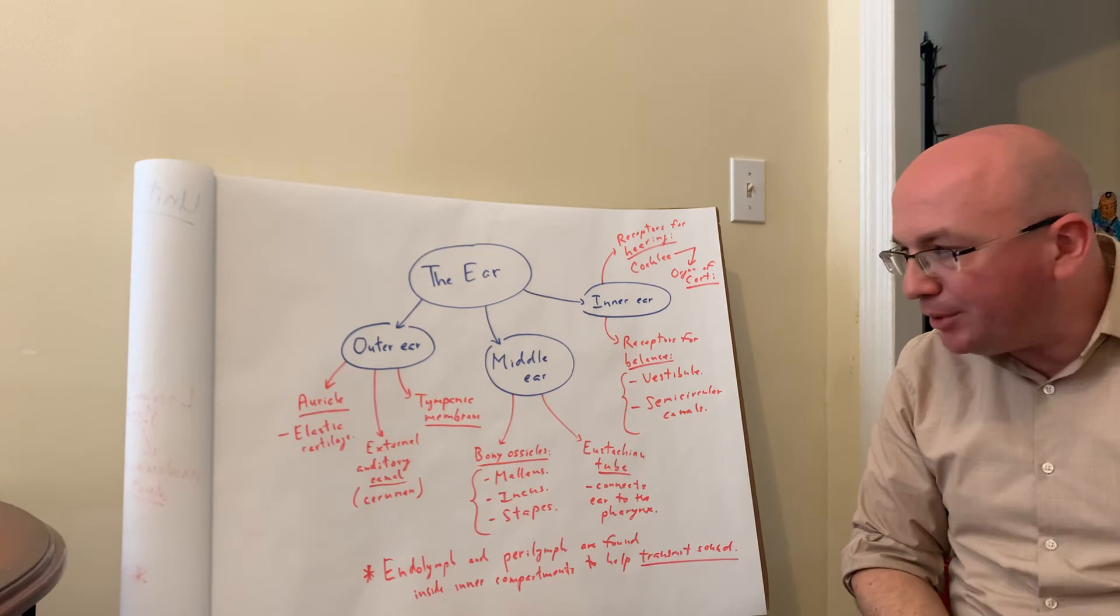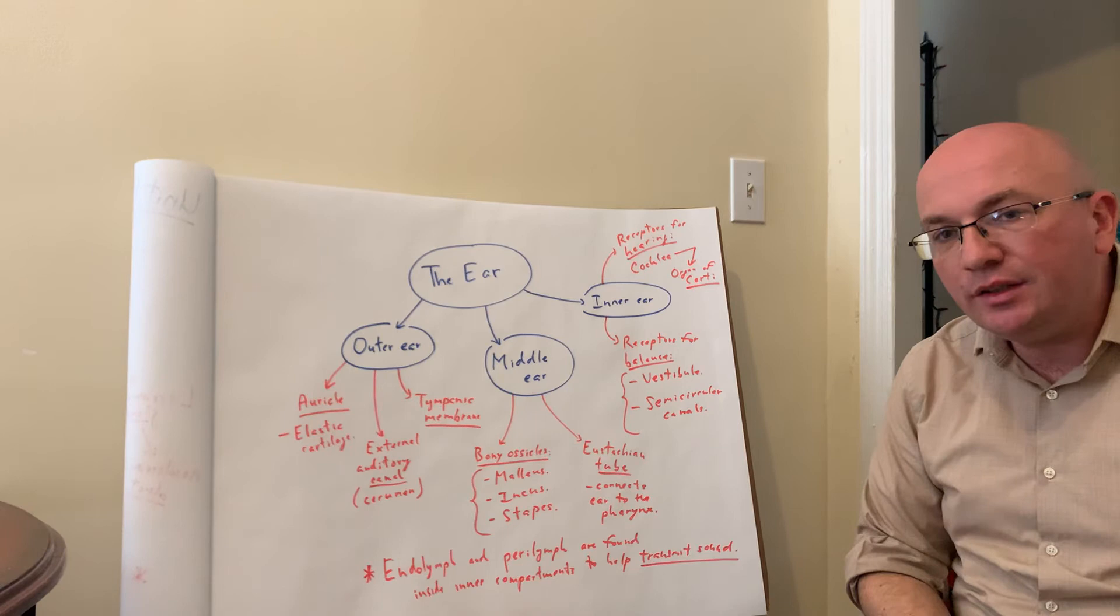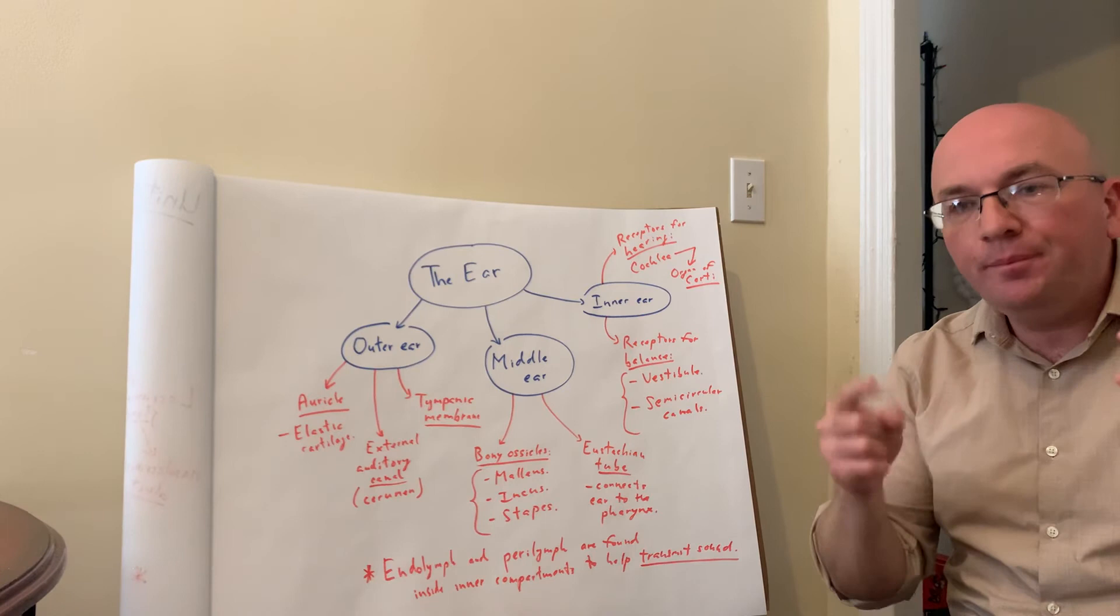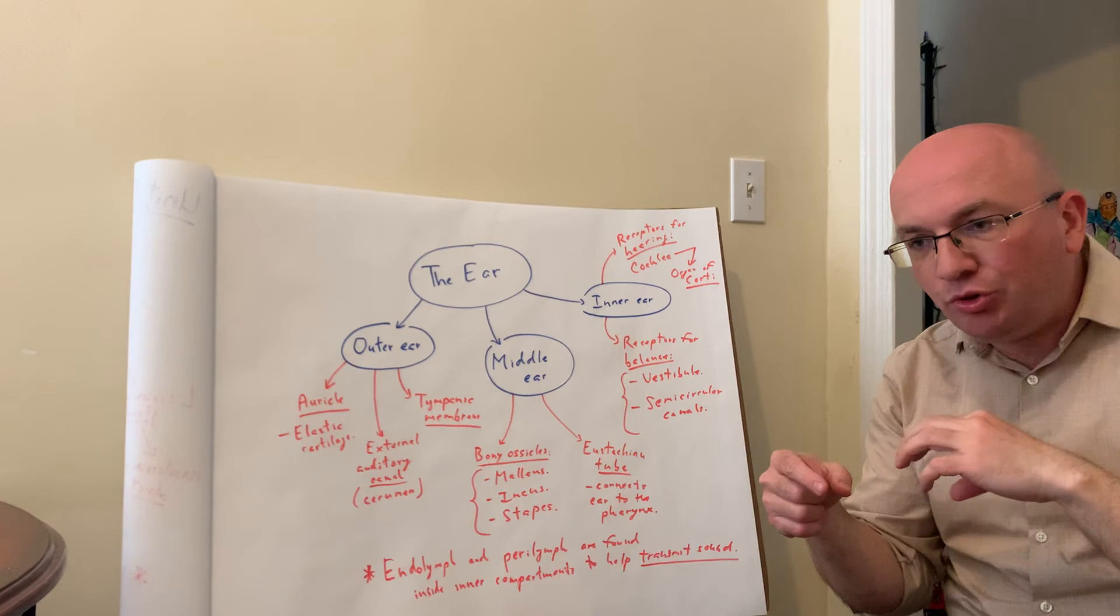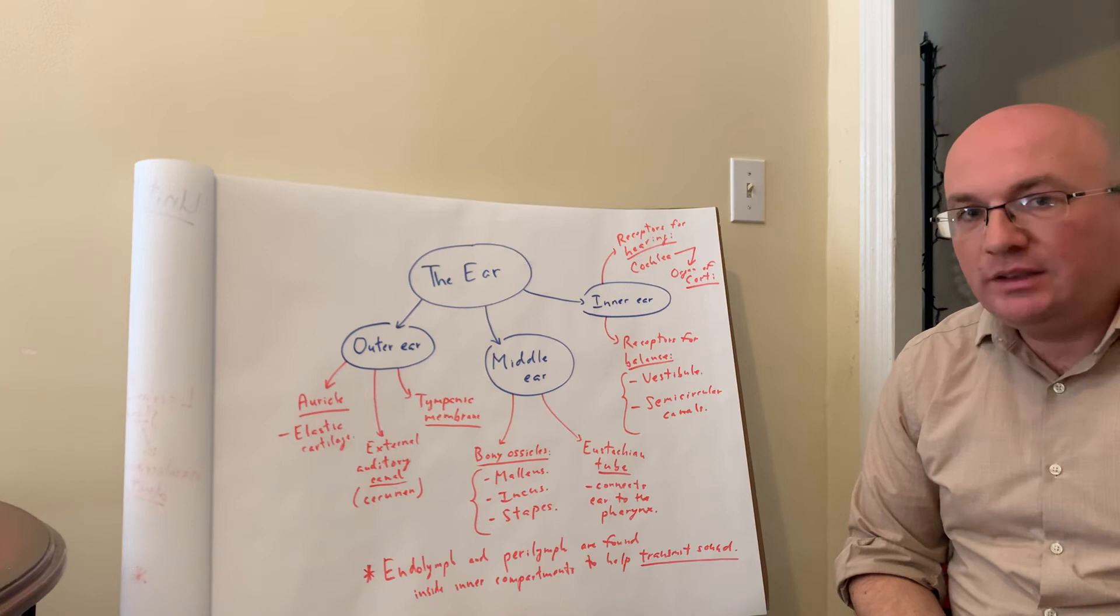Once you are past the tympanic membrane, now you're in the middle ear. In this area, immediately connected to the tympanic membrane, we have three bony ossicles. These are the smallest bones in the body, the malleus, incus, and stapes. Make sure to see them in illustrations in the book. They're all connected to the tympanic membrane. Essentially, when the tympanic membrane starts to vibrate, the transmission of vibration goes through the bones, which are further connected to the rest of the hearing mechanisms to transmit the sound more efficiently.